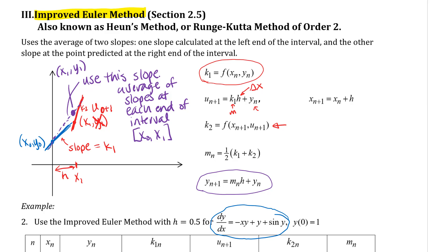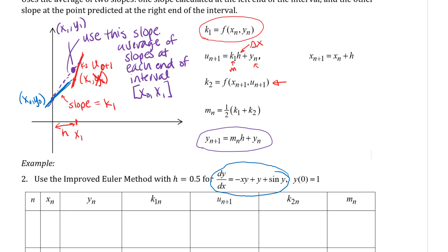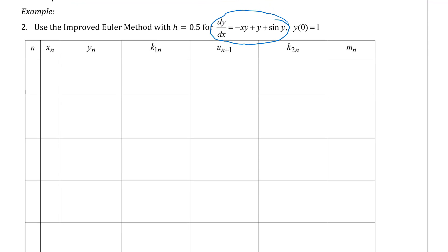We're going to go through just one cycle of these calculations by hand and then use the app to get the rest. We're going to use the same differential equation we used in the last example, the same initial value, and we'll fill out this chart until we get to the end. We're going to use h equals 0.5, so our initial x- and y-coordinates are 0 and 1 — those are given. That's the zeroth iteration, and we're doing four iterations, so x-coordinates will increase by 0.5.